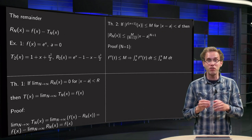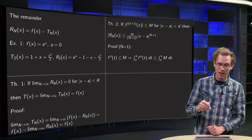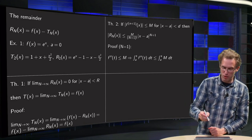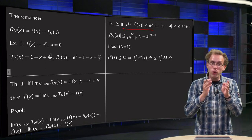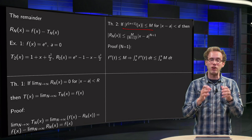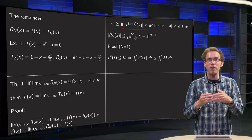But, well, the second theorem is more important. It tells us something about how we can estimate the remainder. Well, it goes as follows. If you know that your n-th derivative is smaller than some value capital M.